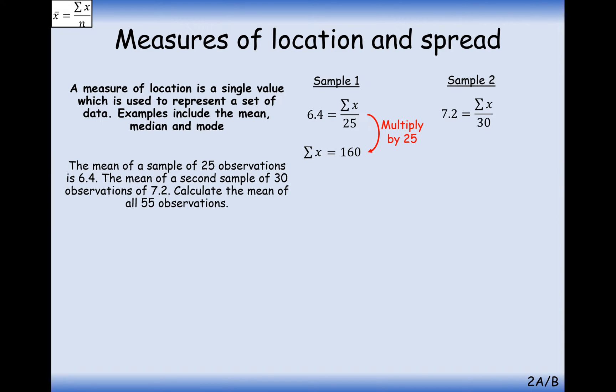for the 30 observations of data. So 7.2 is the mean, times that by 30, and we'll get 216. So if you were to add up all of the pieces of data from sample two, you will get 216, and then you'd have to divide it by 30 to get 7.2. So effectively, we're working backwards up to what the summation of our data is.